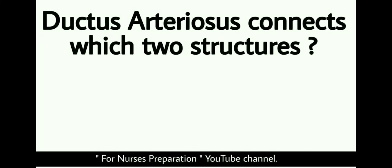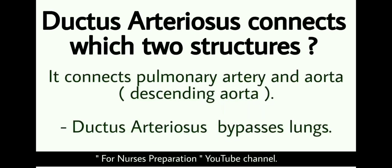Ductus arteriosus connects which two structures? This is the last question. After watching this complete video, please comment in the comment box how many questions you answered correctly. The right answer is: ductus arteriosus connects the pulmonary artery and the descending part of the aorta. Ductus arteriosus bypasses the lungs.